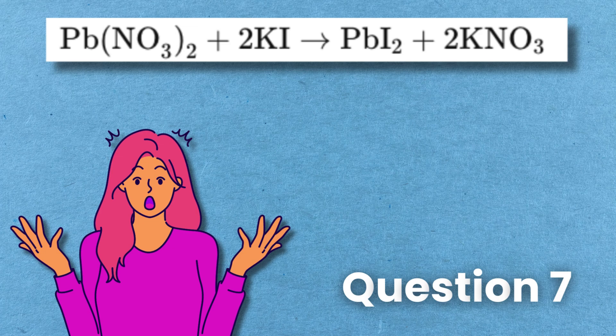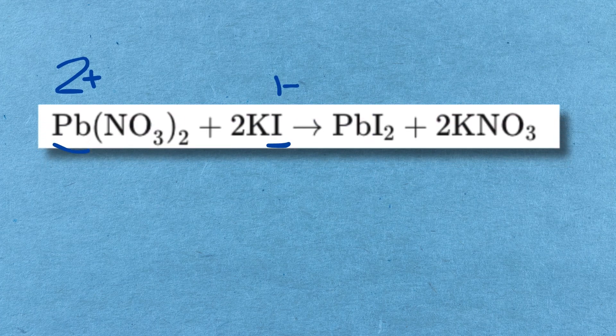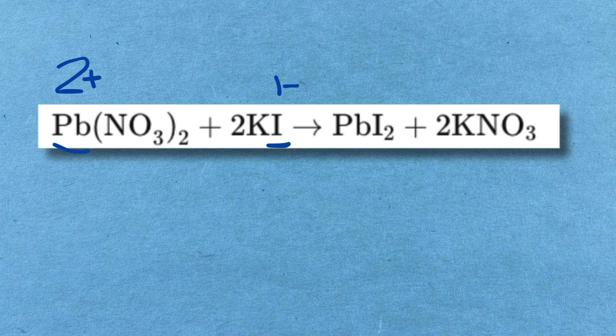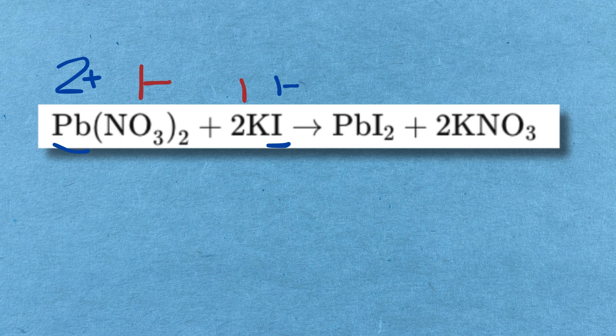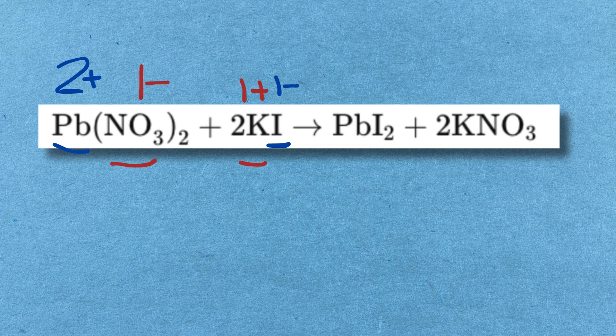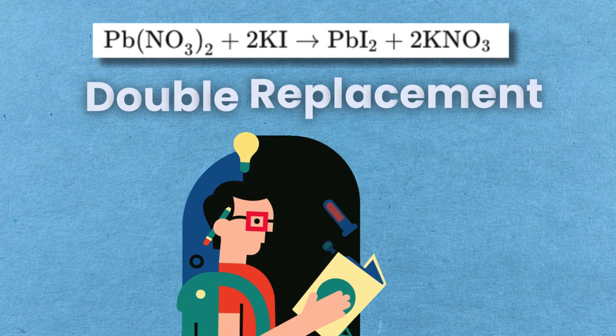PbNO32 plus 2KI gives PbI2 plus 2KNO3. So, the lead 2 plus ion combines with the iodine 1 minus ion to form PbI2. And the K1 plus ion reacts with the NO3 1 minus ion to form KNO3. So, it is a double replacement reaction.